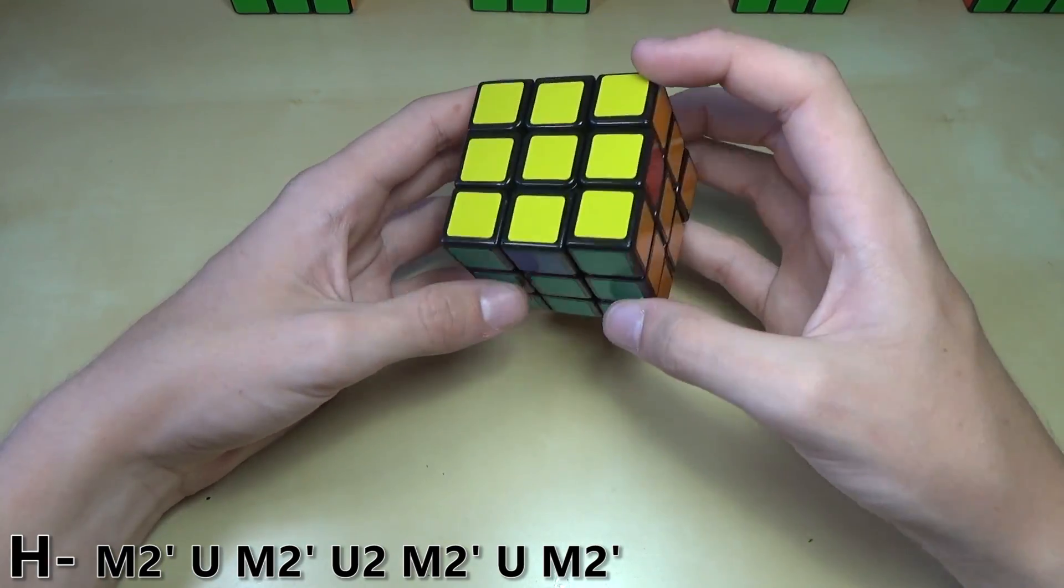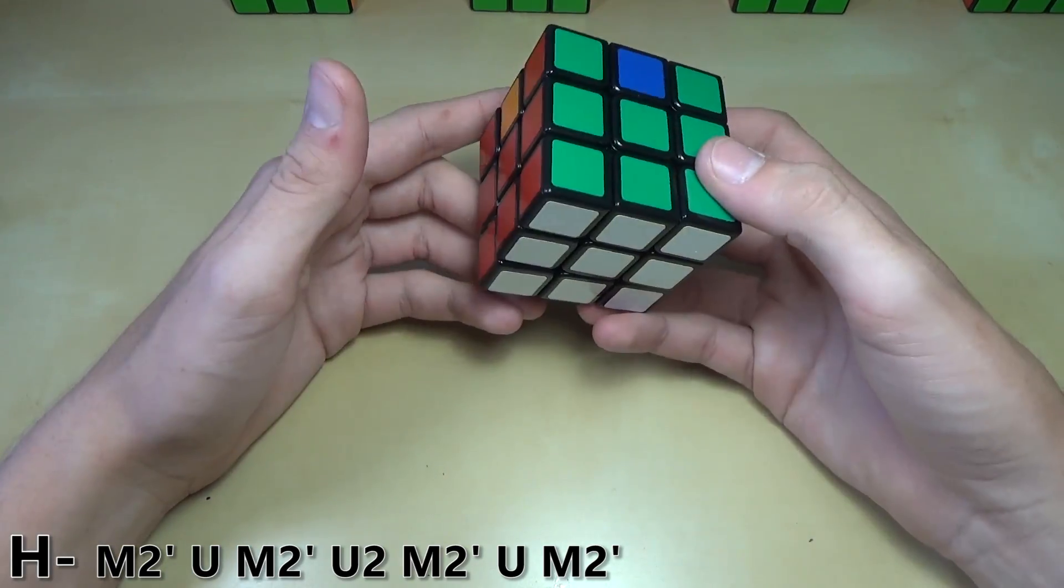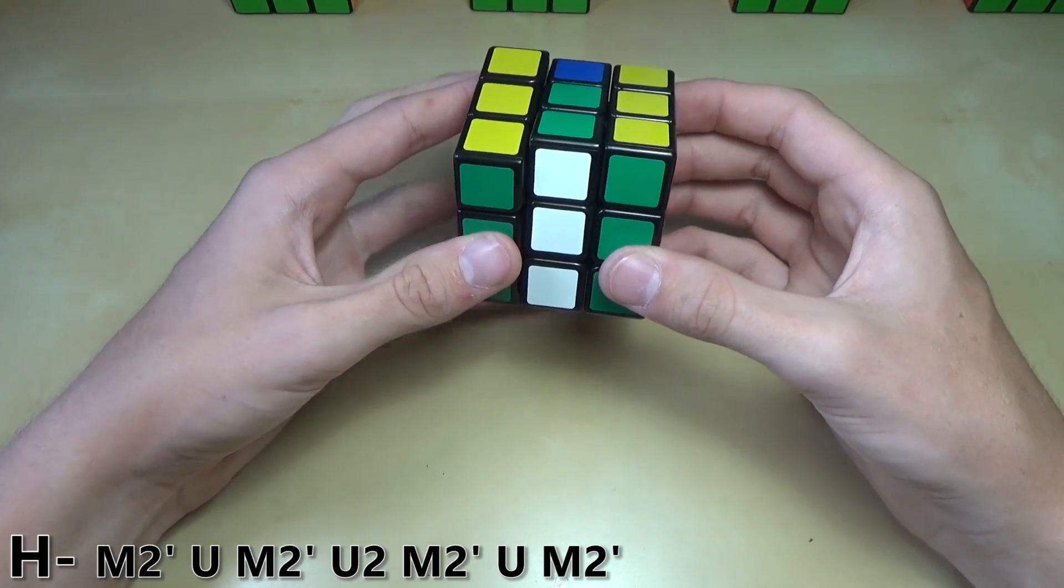This is where you just have 4 edge pieces like this that need to be flipped opposite. This one is pretty simple to learn the algorithm, but it actually is a little bit tricky to learn how to do it correctly. It involves lots of M2 moves like this.